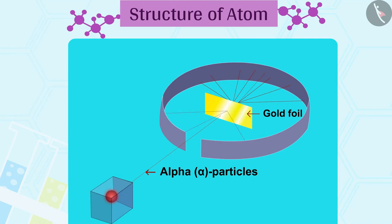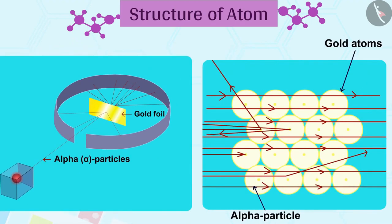2. Some of the alpha particles were deflected by the foil by small angles. 3. One out of every 12,000 particles appeared to rebound.